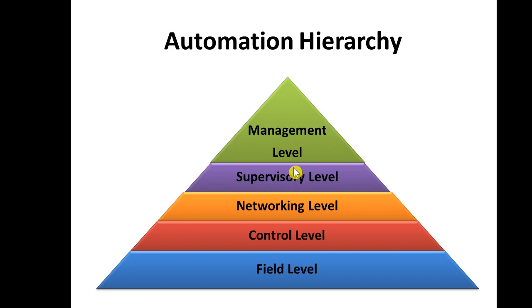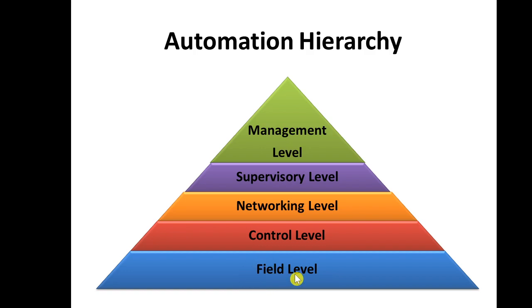The five levels are: field level, control level, networking level, supervisory level, and management level. The field level is the innermost level of the automation hierarchy. In this level there are many devices and components used, like sensors, push buttons, actuators, and lamps. These devices interface with the floor activities.